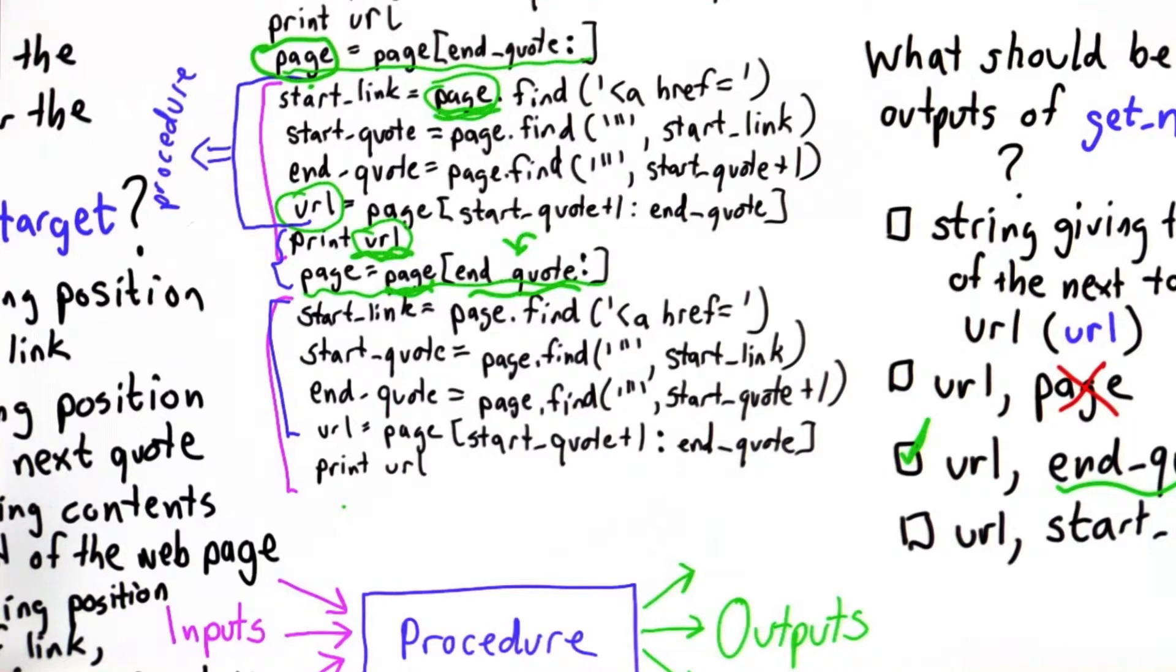So now that we know the inputs and the outputs, the procedure almost writes itself, especially since we already know the code that we want to execute before we define the procedure.